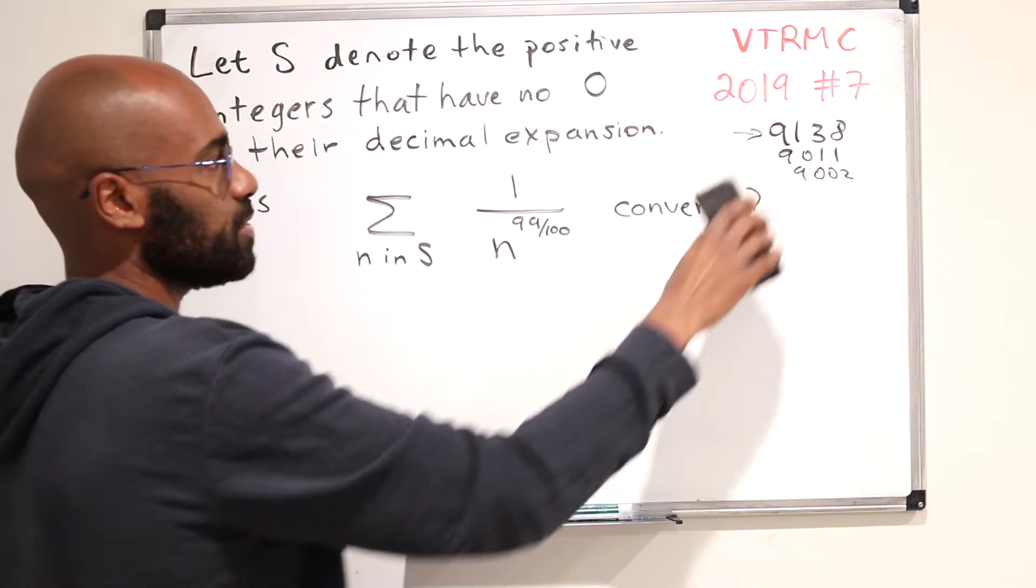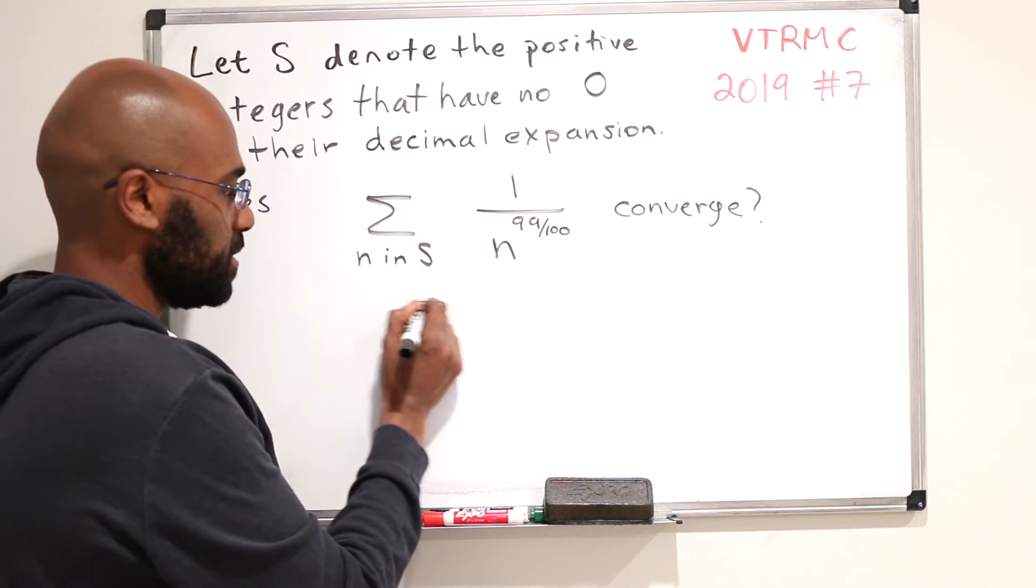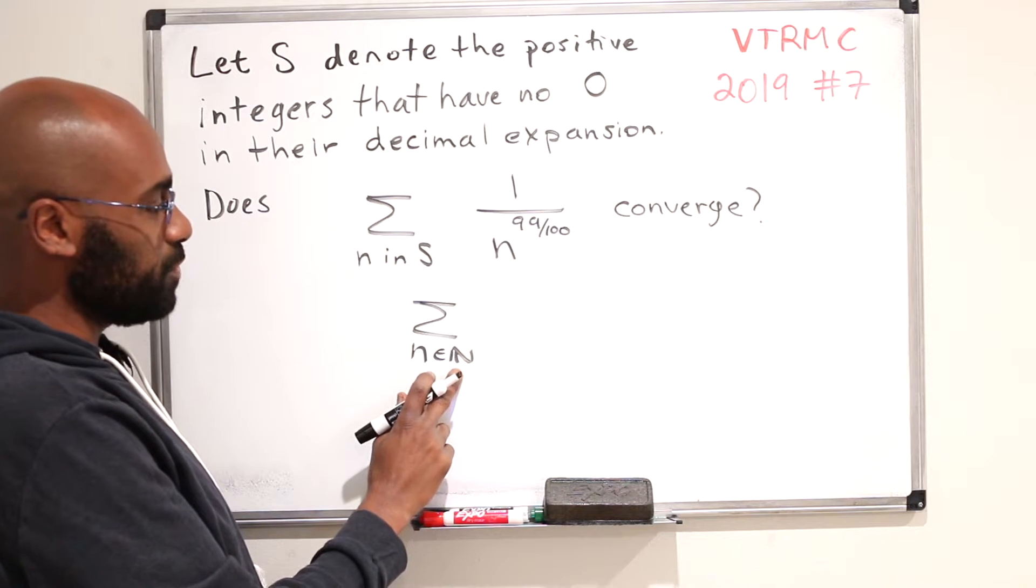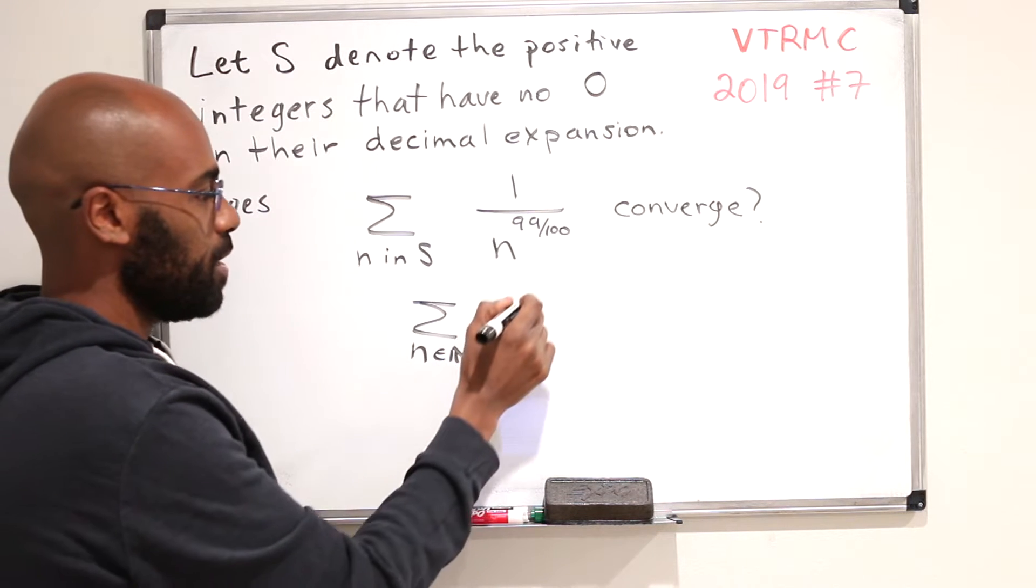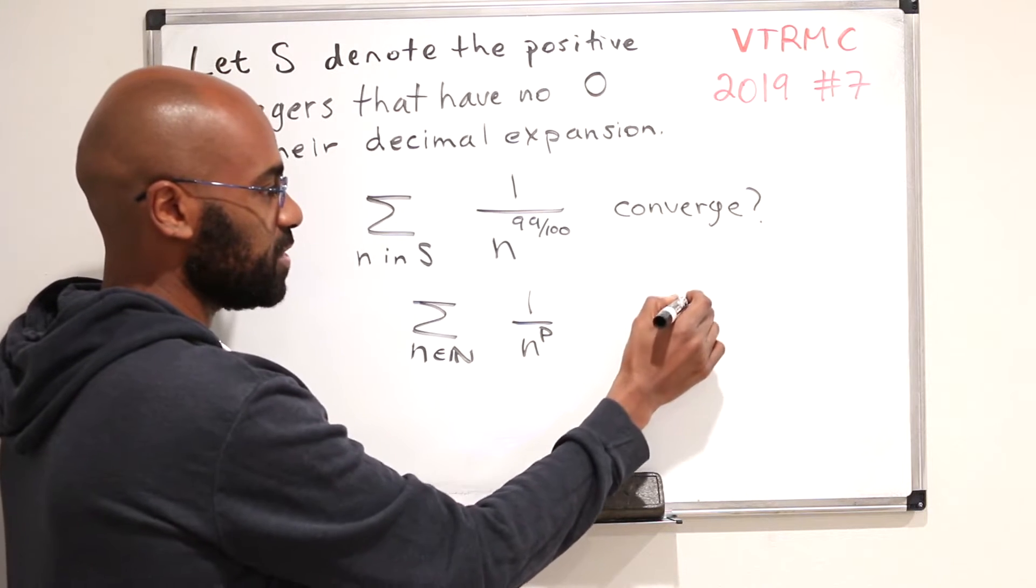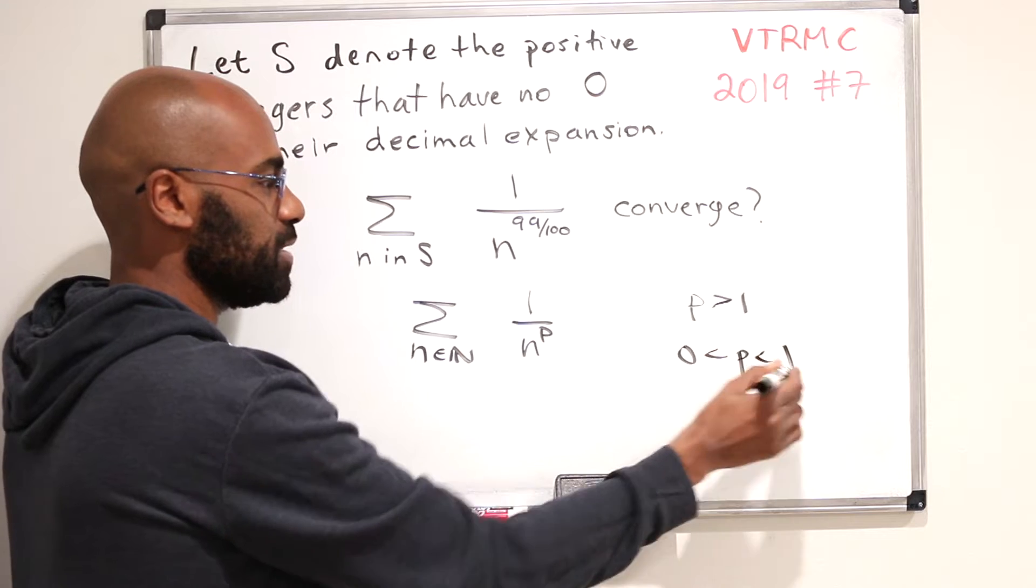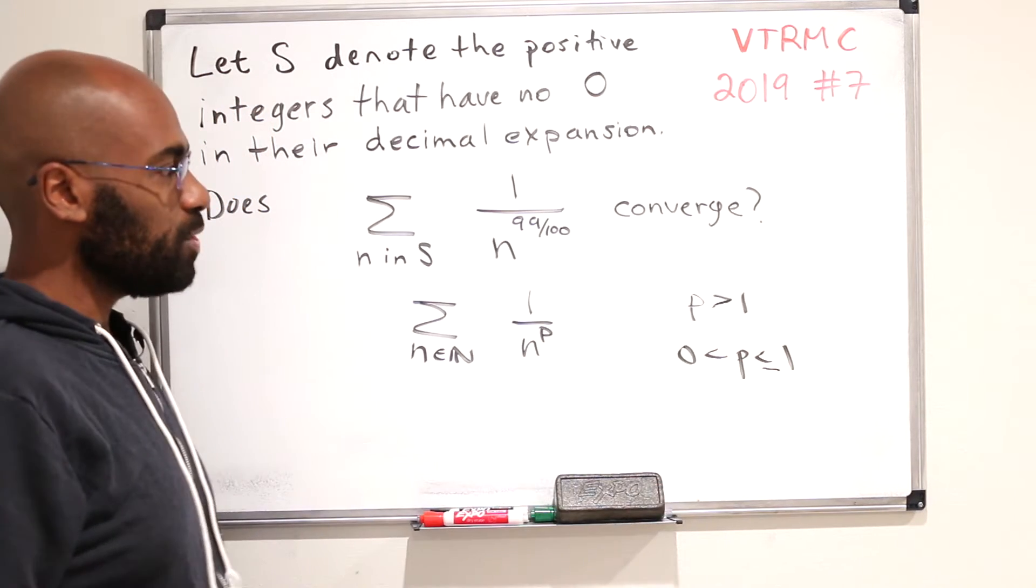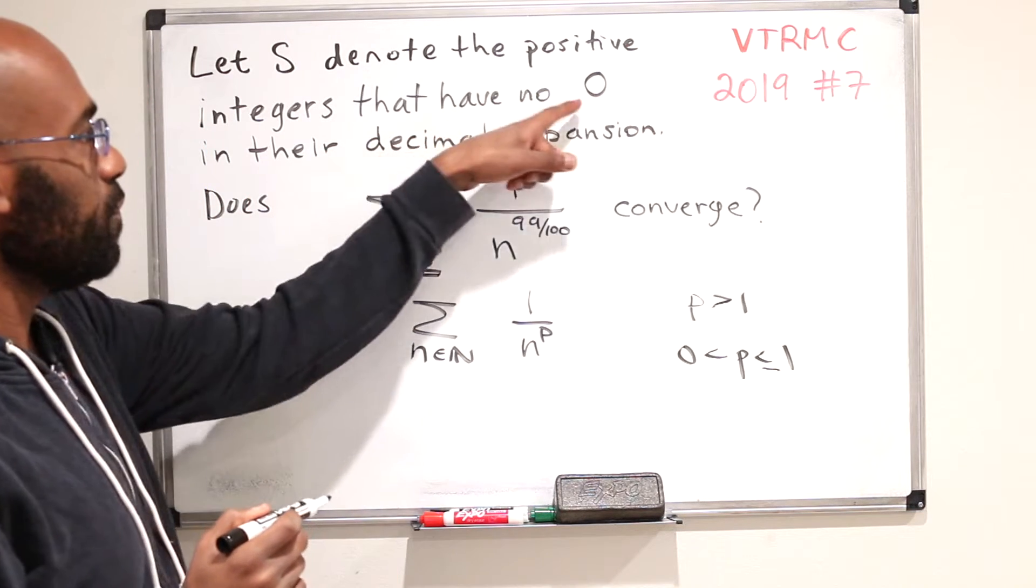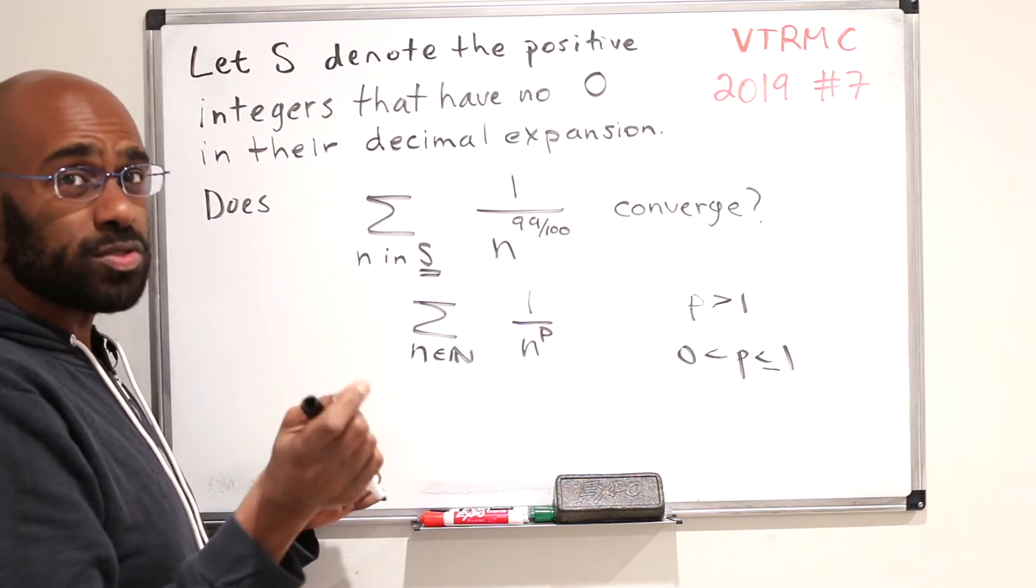Before diving into this problem, I want to explain why I think this is kind of an interesting phenomenon. If you look at the sum over n in the natural numbers of 1 over n to the p, one thing that you learn in a calculus course is that this series converges for p strictly greater than 1, and it diverges when p is between 0 and 1. What's happening here is you're not summing over all natural numbers, but you're getting rid of the ones that have a zero in their decimal expansion, you get rid of those, so you keep all the rest.